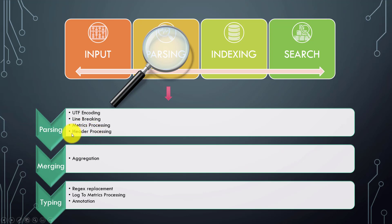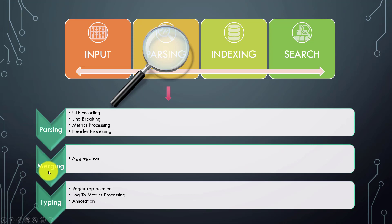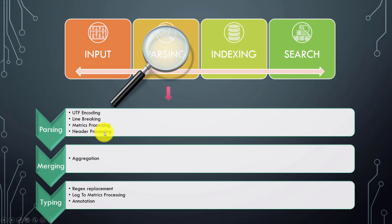Another interesting thing is called header processing, which we will discuss today. After the parsing phase, aggregation happens — this is called the merging phase. When you have multi-line events, that kind of aggregation happens at this merging phase. In the typing phase, regular expression replacement happens, and if you are converting logs to metrics, those processing annotations happen in that phase. So these are actually all part of the parsing phase broadly, but they are distinct sub-phases, each with different processors involved.